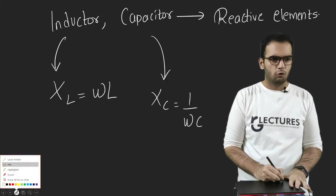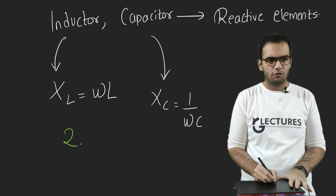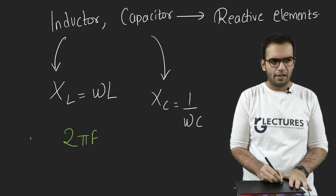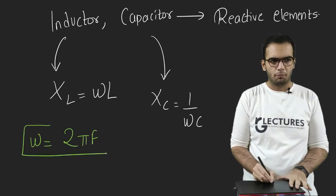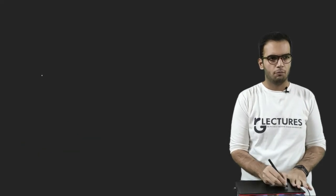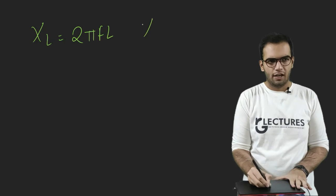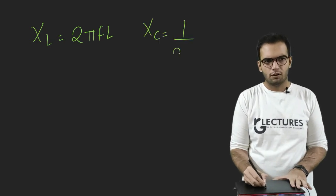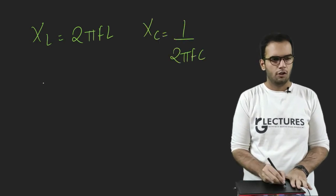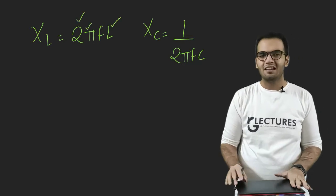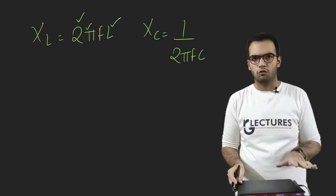Now what are these terms called as omega? Omega is generally referred to as 2 pi F. Omega is equivalent to 2 pi F. So basically I can write XL equals 2 pi FL. And I can write XC equals 1 upon 2 pi FC. So 2 is a constant, pi is a constant, L is the inductance and it is also constant.